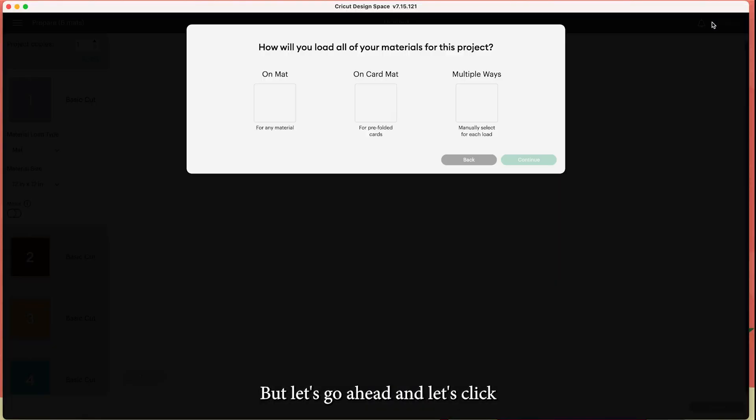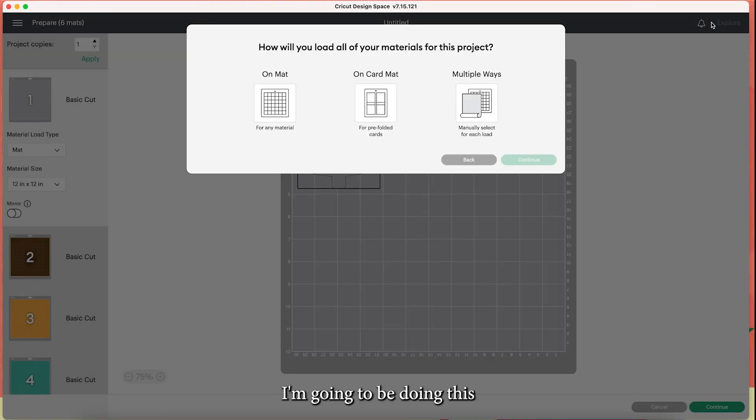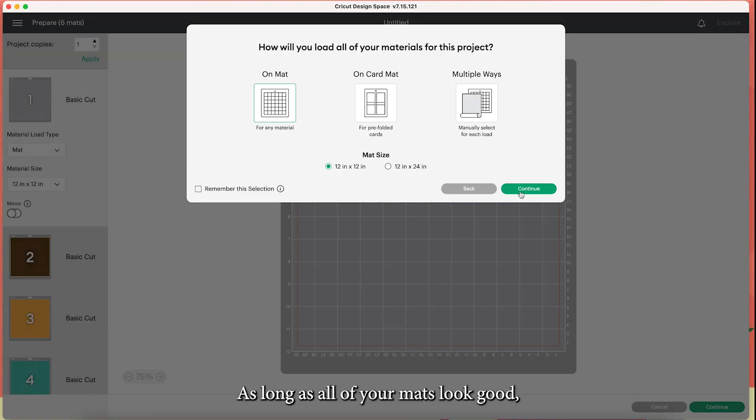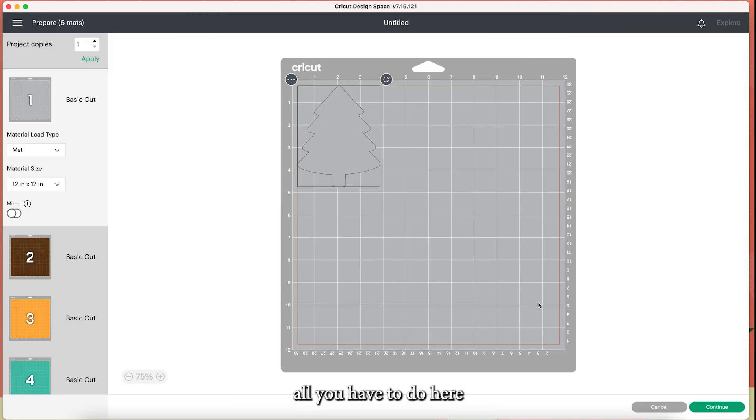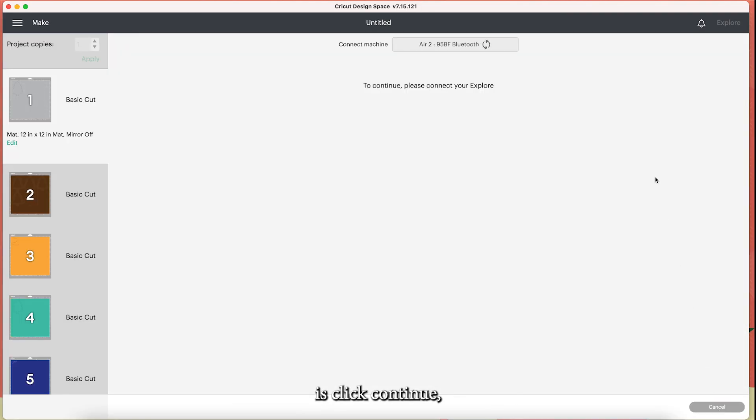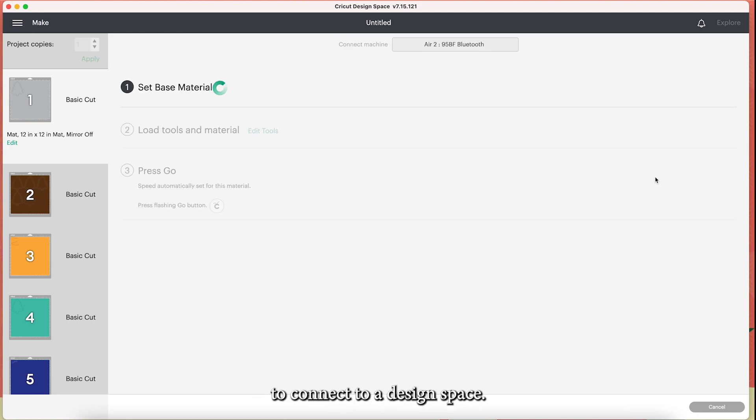But let's go ahead and let's click make it. I'm going to be doing this all on the mat. As long as all of your mats look good, all you have to do here is click continue and that will prompt your machine to connect to Cricut Design Space. And then we can start selecting our materials.